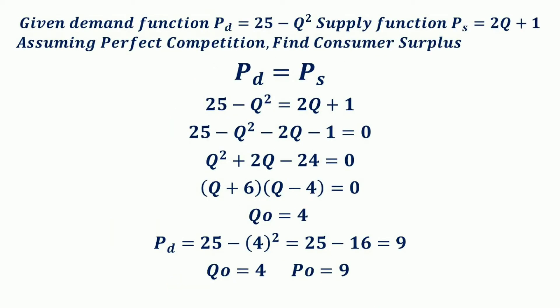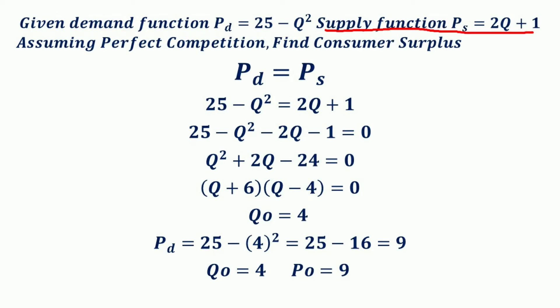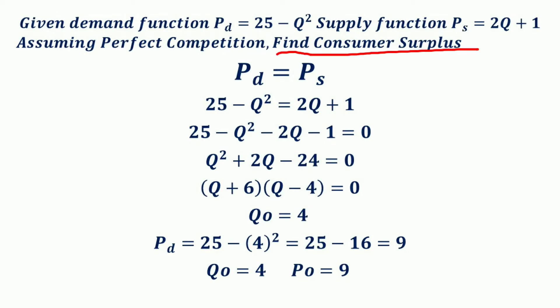Now consider another example where both demand and supply functions are given. The demand function is PD = 25 minus Q² and the supply function is PS = 2Q plus 1. We assume perfect competition and want to find the consumer surplus. In this example, the equilibrium price and quantity are not given, so we need to calculate them.